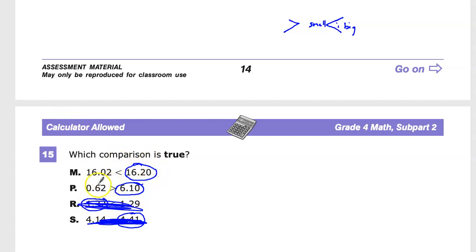For P, it's telling us that 0.62, so 62 hundredths, is somehow greater than 6 and 1 tenth. Well, obviously that's not true. It's also saying that 6 and 1 tenth is less than 62 hundredths, which, no.